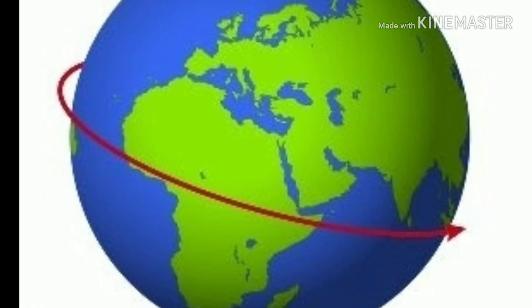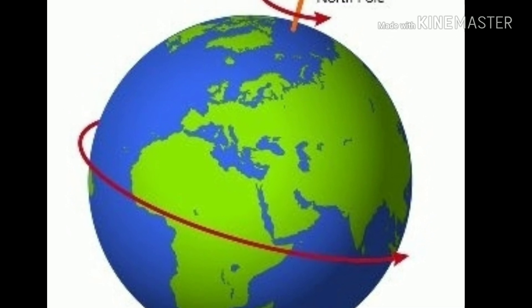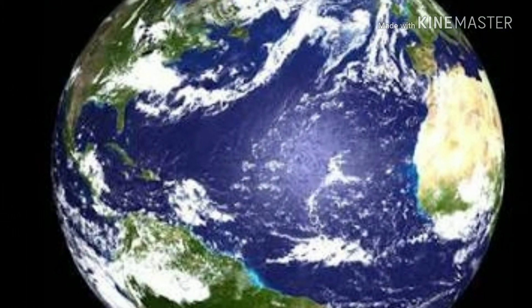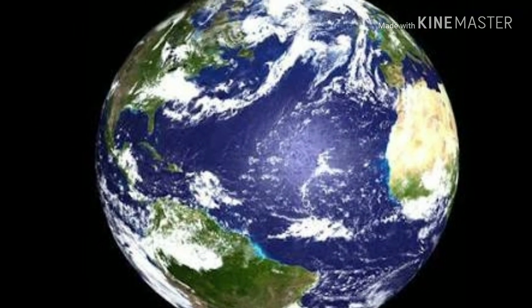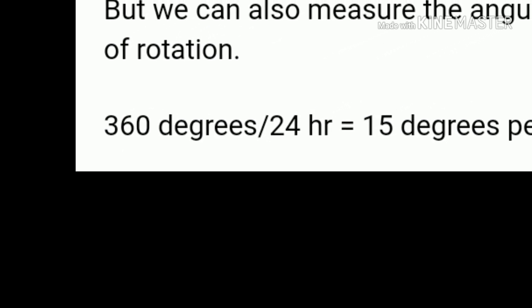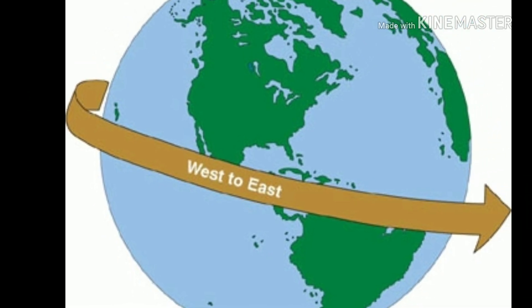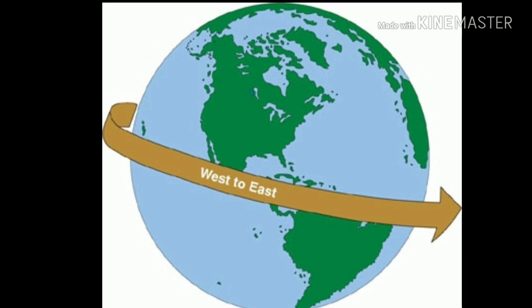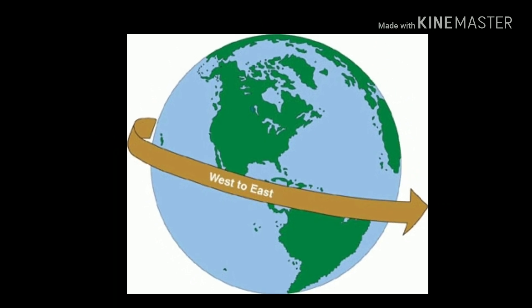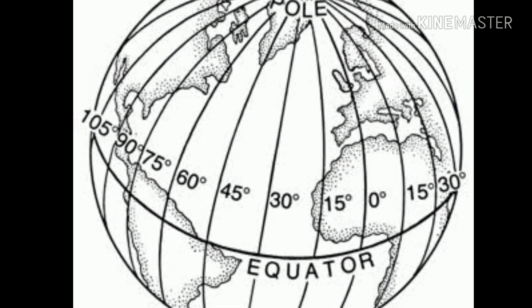The Earth is 360 degrees. It's divided into 24 hours, so 15 degrees per hour. If we look at the Earth, in 24 hours the Earth rotates 15 degrees per hour. So over 15 degrees, we made a longitude and a time zone.